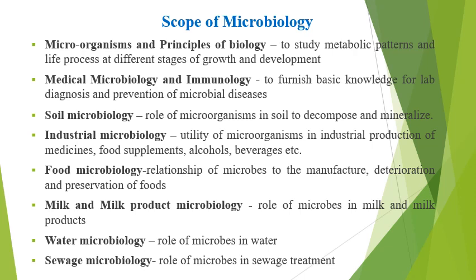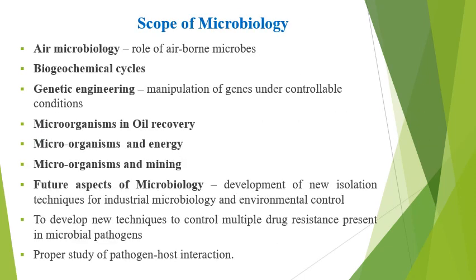Biogeochemical cycles is the flow of chemicals between living and non-living things, where microbes decompose dead plants and animals into simple chemical nutrients used by plants and photosynthetic organisms. Plants use up these chemical nutrients and incorporate them into complex organic compounds, which is the ultimate source of food for all animals. When these plants and animals die, microorganisms decompose these complex organic compounds of the dead bodies back into simple chemical nutrients. This cycling of nutrients in the earth is called biogeochemical cycles.